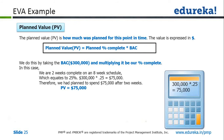How did we arrive at that? The total duration is eight weeks. We did work for two weeks — that means 25% of the time is gone. And in 25% of the time, we were supposed to complete work worth 25% of $300,000, that is $75,000. So we get the value for our first element, that is PV.